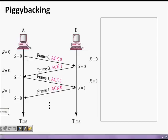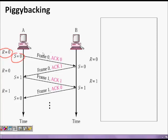Now let's look at piggybacking. In bi-directional communication, both A and B are sender and receiver. A sends frame 0 and also indicates it received frame 1 from B by including ACK 0. B sends frame 0 and includes ACK 1 saying it received A's frame 0. A sends frame 1 and acknowledges B's frame 0 by including ACK 1. The acknowledgement is carried along with the data frame — this is piggybacking.